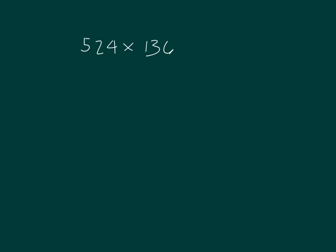Here we have 524 times 136. Let's designate 524 as our unit. The area model for this will be different in that there will be 3 columns and 3 rows. There's 524 and here's 136.